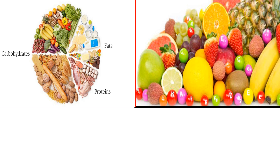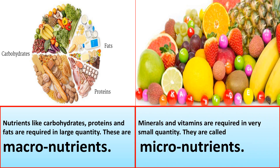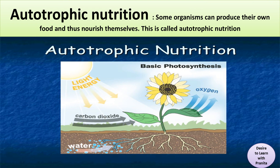Nutrition is classified into two types. First, macronutrients — like carbohydrates, proteins, and fats — are required in large quantities. Minerals and vitamins are required in very small quantities and are called micronutrients.